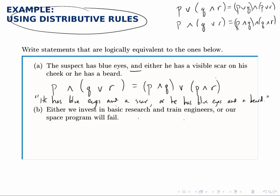For the second one, we can do the same thing, but notice that we have EITHER and then a compound statement with AND, OR a last piece. So we have EITHER, or our space program will fail.